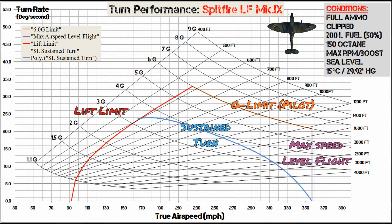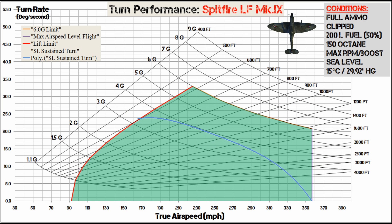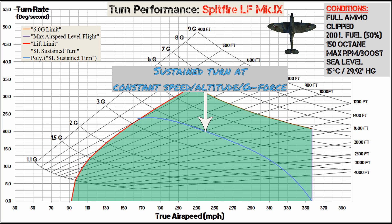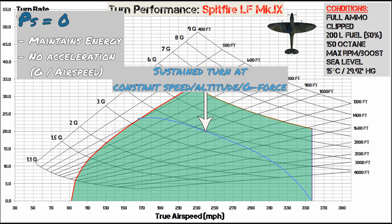Here's the EM diagram for the Spitfire LF Mk9. We have the max speed in purple on the far right, the G limit in orange, the lift limit in red, and the sustained turn data in blue. The blue line is your sustained turn data, meaning you're maintaining a constant speed, altitude, and G-force — so your specific excess power along this line equals zero because you're maintaining your energy with no acceleration.